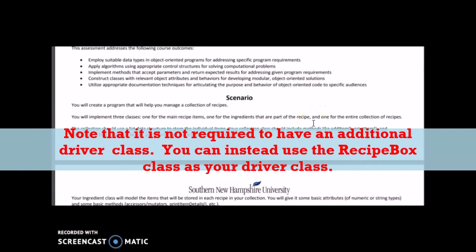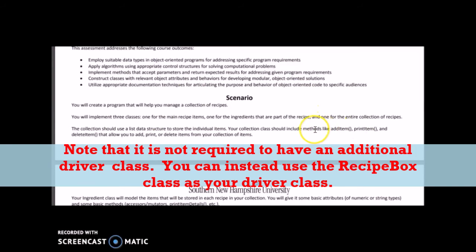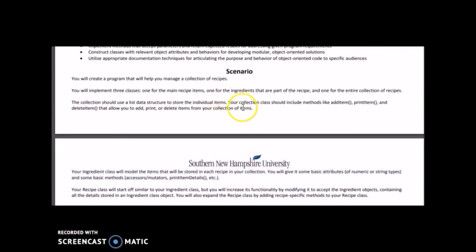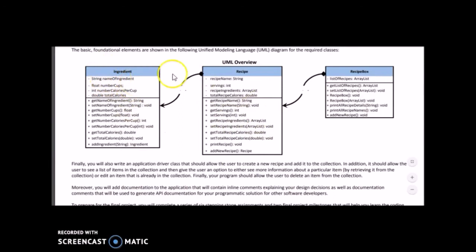Additionally, you'll have the driver class, which will call the menu method of the recipe box class and allow the user to interact with the program. Make sure you've covered all the different methods and instance variables of all the classes — that's all explained in the UML diagram. Go through each UML diagram for each class and make sure you've covered each of the variables and methods. For your final project, make sure everything is complete and you've covered all the aspects described in this document.